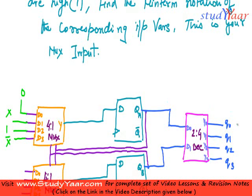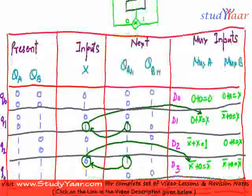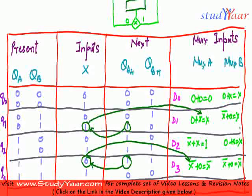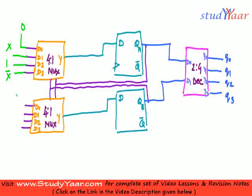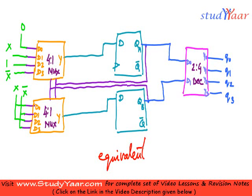Your dA is ready. Your next set of values are x, x bar, x, x bar. So these two you are going to connect with x, and these two you are going to connect with x bar. So this is your equivalent logic diagram having conditional inputs.